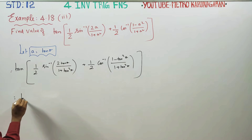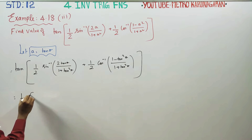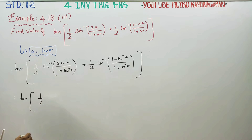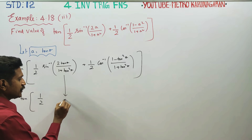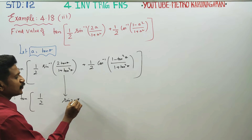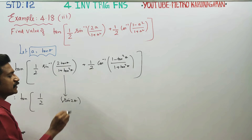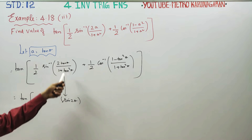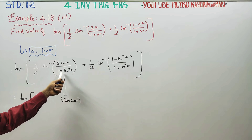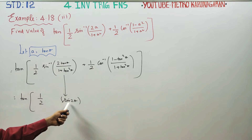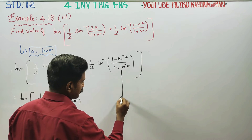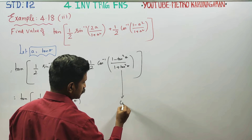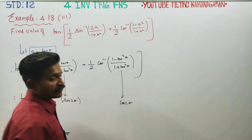Next stage: tan of 1/2 of sin 2θ plus cos 2θ. From the 11th standard book, the double angle formulas are: 2tan θ / (1 + tan²θ) = sin 2θ, and (1 - tan²θ) / (1 + tan²θ) = cos 2θ.